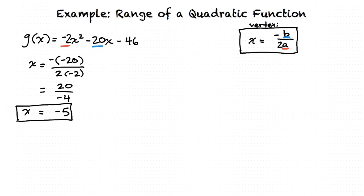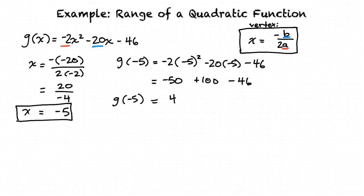So we substitute this in for x in the function to find the y value of the vertex. And after doing this, we find that the y value of the vertex is positive 4.